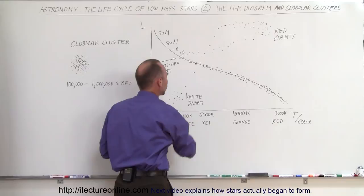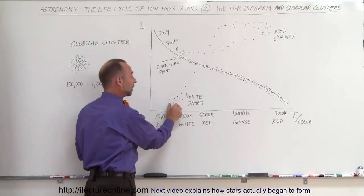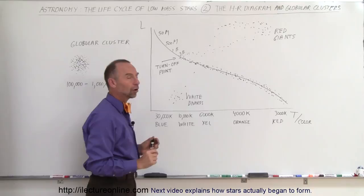White dwarfs are very small, very dense, very hot stars. The surface is very hot, but they're very tiny and have very low luminosity. That would then be the end stage of a star.